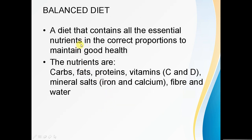What is the definition of a balanced diet? You need to memorize this definition: a diet that contains all the essential nutrients in the correct proportions to maintain good health. The nutrients we're talking about here are carbohydrates, fats, and proteins — covered in another video — and furthermore vitamins, mineral salts, fibre, and water.